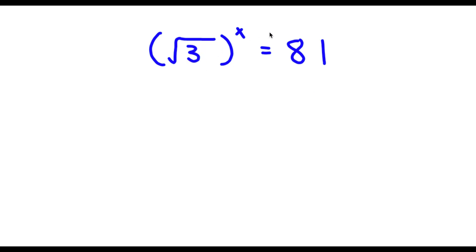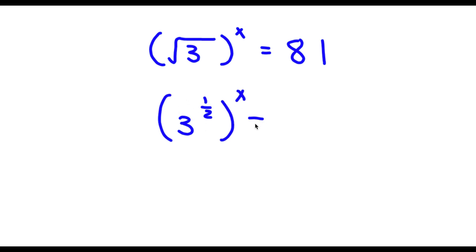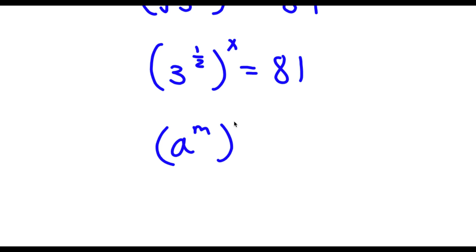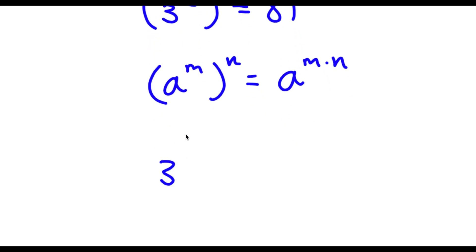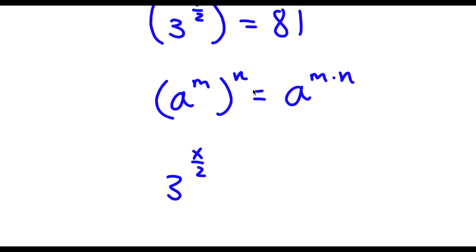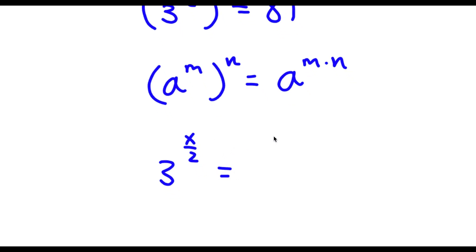Alright, so I have square root of 3 to the power of x is equal to 81. Now the square root of 3 is the same thing as 3 to the power of 1 half. So now I have 3 to the power of 1 half to the power of x is equal to 81. If I have something in the form a to the power of m to the power of n, this is equal to a to the power of m times n. So 3 to the power of 1 half to the power of x equals 3 to the power of x over 2. So I have 3 to the power of x over 2 is equal to 81.